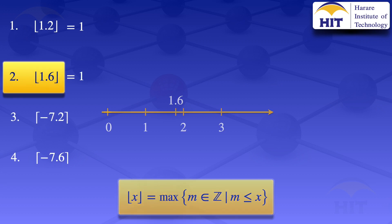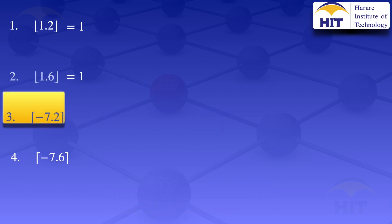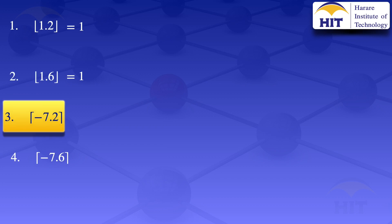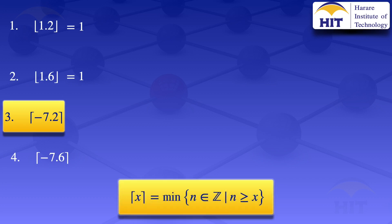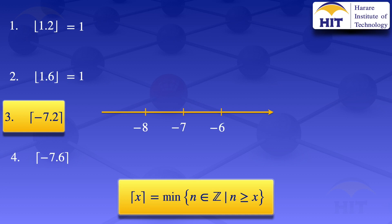Now moving on to number 3, the ceiling value of minus 7.2. By definition, the ceiling value is the smallest integer that is not less than the given value. So in this case, we are looking at the smallest integer that is not less than minus 7.2. I will use the number line for illustration, writing down the integers closer to minus 7.2: minus 8, minus 7, and minus 6, then marking minus 7.2.